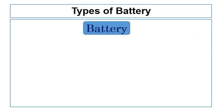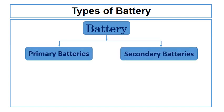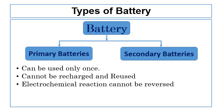The batteries can be categorized in two major categories: primary batteries and secondary batteries. Primary batteries can be used only once. They are batteries that cannot be recharged. These batteries can be used only once and cannot be reused once they discharge. The primary batteries are made of electrochemical cells whose electrochemical reaction cannot be reversed.